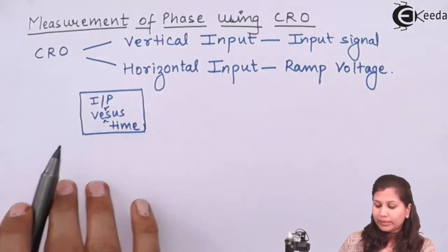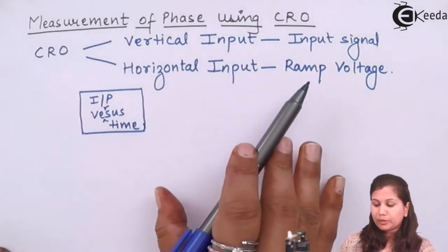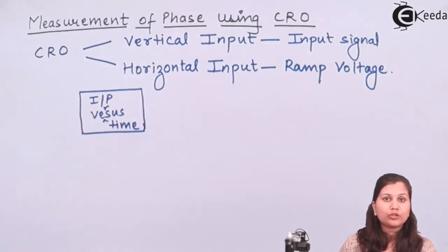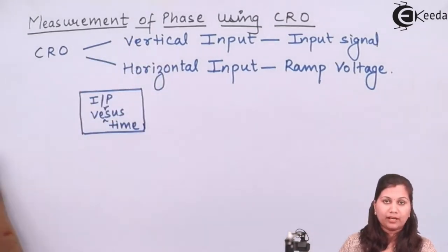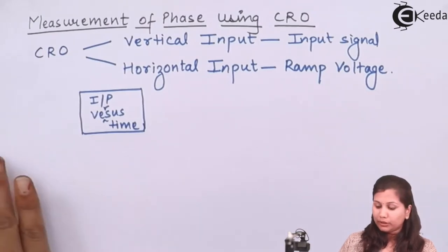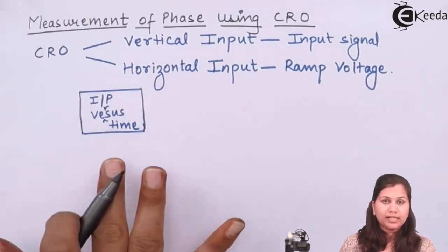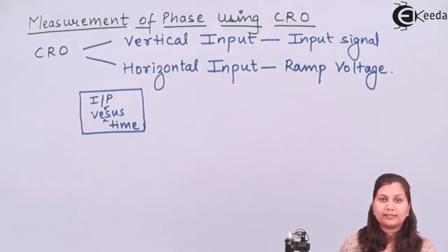Now, instead of using the input signal and the ramp voltage, if we are using two sinusoidal signals as the two inputs of the CRO, then on the display screen of the CRO we will get some patterns, and these patterns are known as Lissajous patterns.